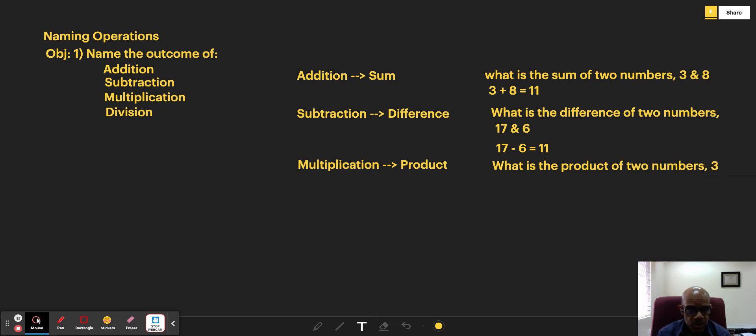Three and 8. In this case, because the product is the outcome of multiplication, what we're being asked is what is 3 times 8. 3 times 8 equals 24, so the product of 3 and 8 is 24.